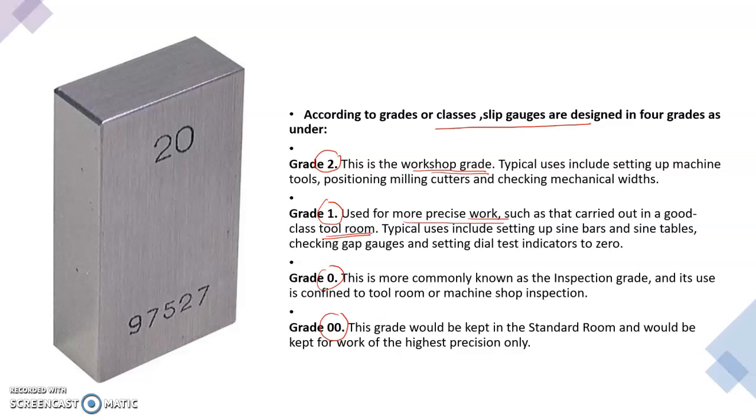Then Grade 0 is more commonly known as the inspection grade. So inspection grade is more precise than the workshop and tool room grades or gauges. Then Grade 00, this grade would be kept in the standard room and would be kept for work of highest precision only.